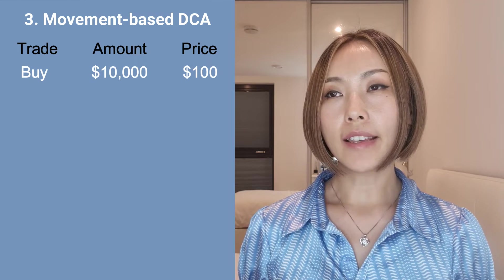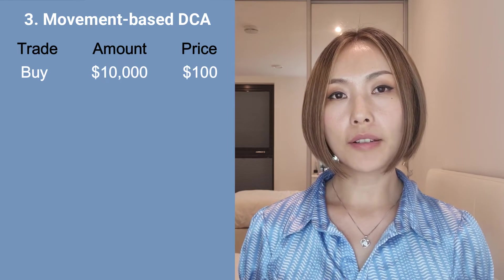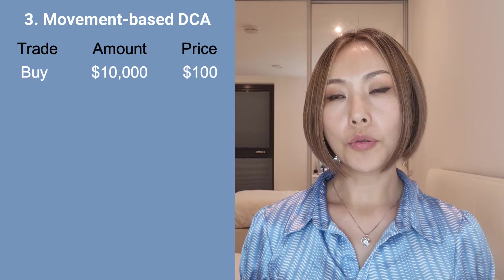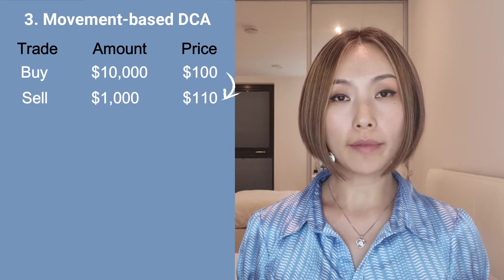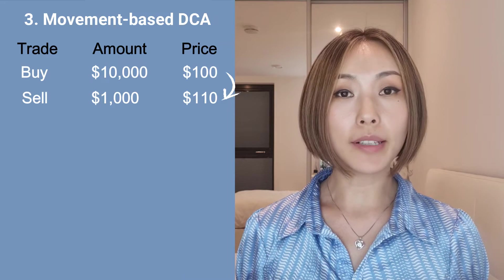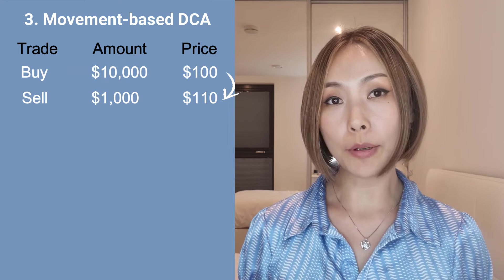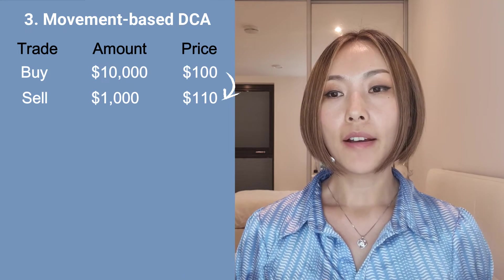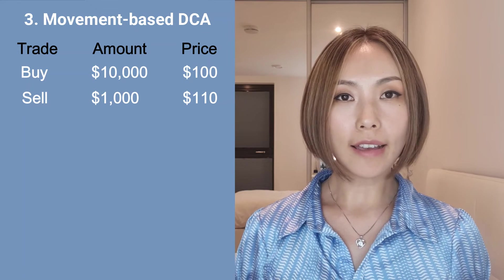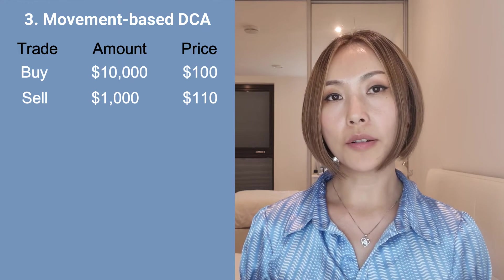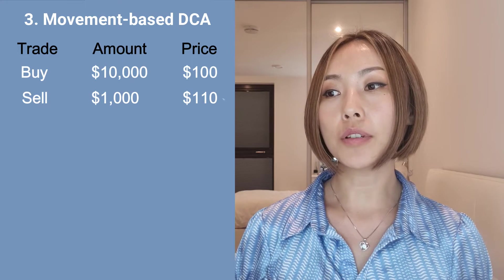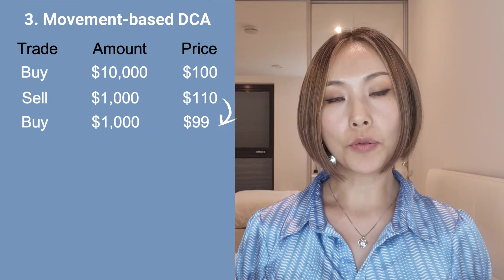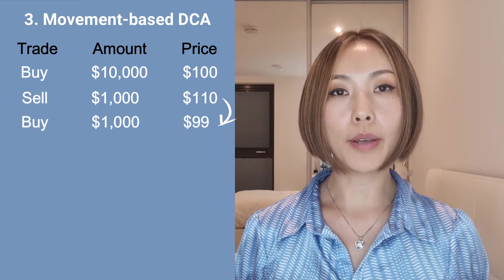If you have invested $10,000 into Bitcoin at the start of applying this strategy, then each time when the Bitcoin price goes up by 10%, you would sell $1,000 worth of Bitcoin — that's 10% of your initial capital of $10,000. On the other hand, if the Bitcoin price goes down by 10%, you would buy an additional $1,000 worth of Bitcoin.